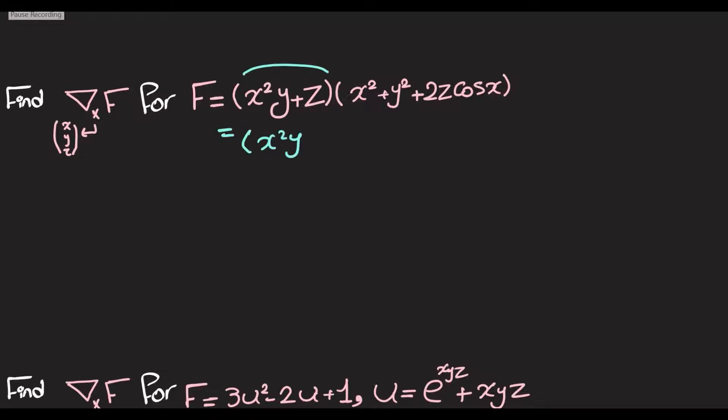x²y + z is left as a constant, then we'll differentiate this with respect to x. So this is going to give me a row vector. The first element is going to be the derivative with respect to x, so 2x minus 2z sin(x), and then with respect to y, that's going to be just 2y.